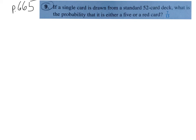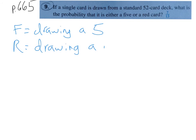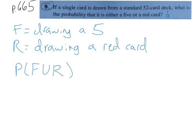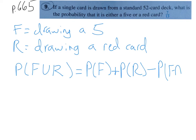Let's use this formula. Page 665, number 9: if a single card is drawn from a standard 52-card deck, what is the probability that it is either a 5 or a red card? Let's name events: let F equal drawing a 5, and let R equal drawing a red card. We want to find the probability of F union R. By the formula, P(F ∪ R) = P(F) + P(R) − P(F ∩ R). Now we just need to figure out each of these probabilities.